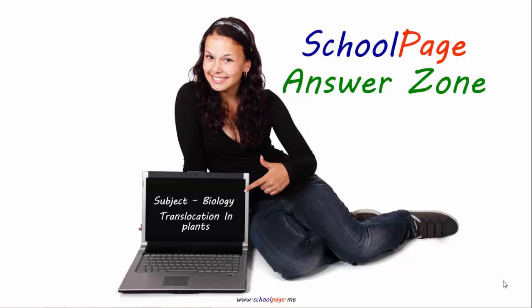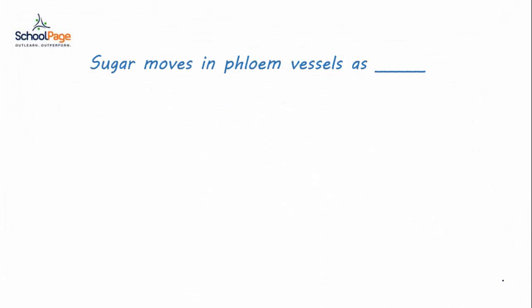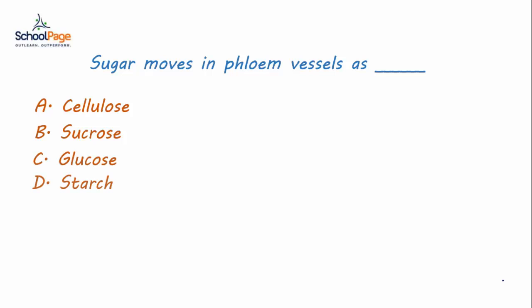Welcome to School Page Answer Zone. Here is your question from biology on translocation in plants: Sugar moves in phloem vessels as option A cellulose, option B sucrose, option C glucose, or option D starch. Let us consider the options and their functions one by one to identify the right answer.